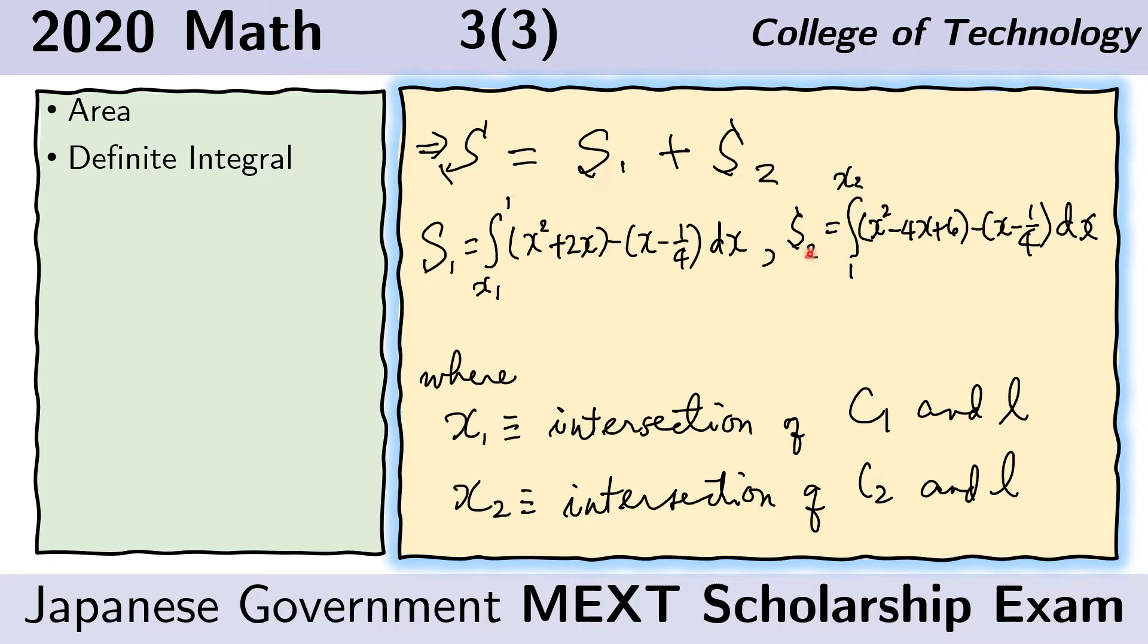For S2, that is the area from the intersection of C1 and C2, which is x equals 1, right up to the intersection of L and C2, which we shall call x sub 2. Now, we have said that for S1, that would be the integral of the difference between C1 and L. And so this will be how we will compute S1 and S2.